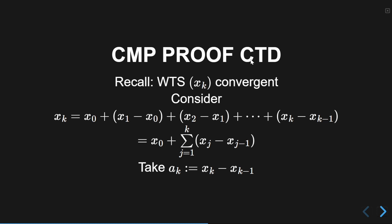Back to the contraction mapping principle proof. We want to show the sequence x_k is convergent. We rewrite x_k cleverly as x_0 plus (x_1 - x_0) plus (x_2 - x_1) all the way up to (x_k - x_{k-1}), with successive terms canceling. This equals x_0 plus the sum from j=1 to k of (x_j - x_{j-1}). We define a_k to be the difference x_k minus x_{k-1}, and now we apply our sub-lemma.